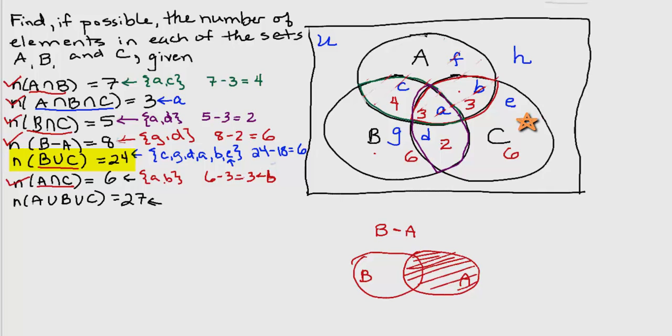So we're done with that piece of information and there's really only one piece of information left. And that is that the union of all three sets contains 27 elements. Well, the union of all three sets is going to include all of the regions except for H. It will have A,